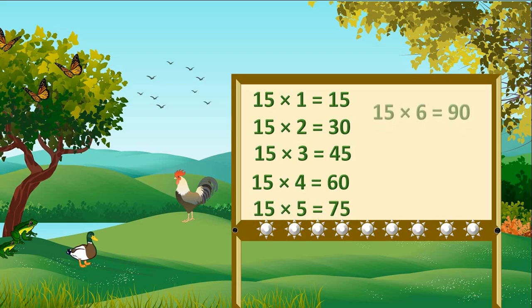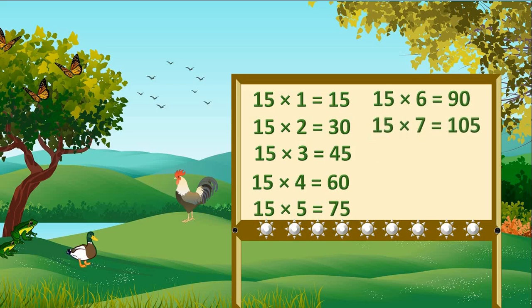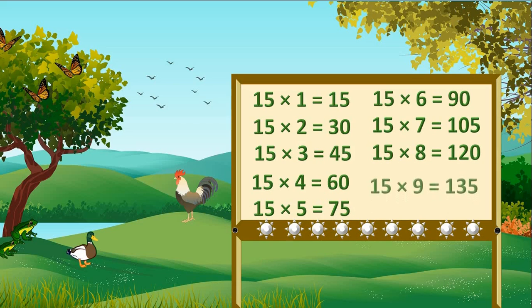15 6s are 90. 15 7s are 105. 15 8s are 120. 15 9s are 135. 15 10s are 150.